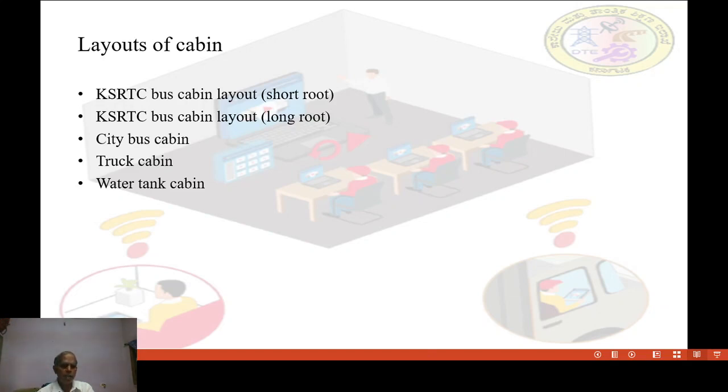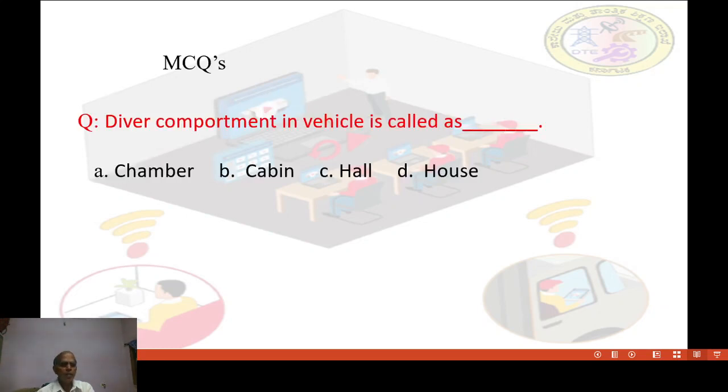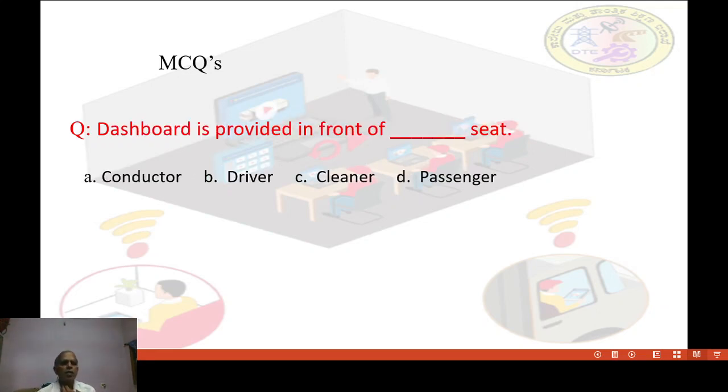I'll ask some multiple choice questions. Number one: driver compartment in a vehicle is called as dash. Choices: chamber, cabin, hall, house. Cabin is the correct answer. Next question number two: dashboard is provided in front of dash sheet. Choices: conductor, driver, cleaner, passenger. Correct answer is driver seat.